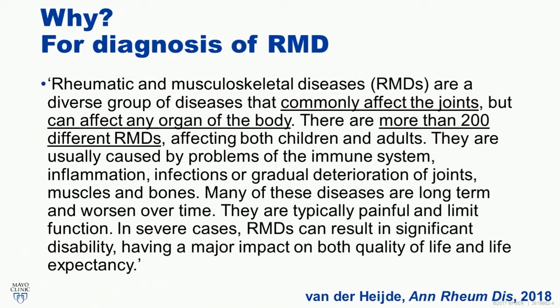There are about 200 different kinds of rheumatic diseases. So we've talked about some — we've seen scleroderma, rheumatoid arthritis, lupus. But there's a bunch of other things: the vasculitides, a number of disorders, all of which may present with an arthritis, a polyarthritis, an inflammatory arthritis.